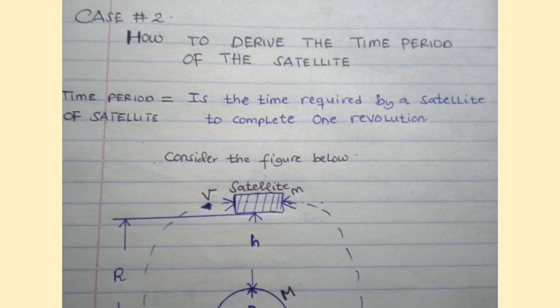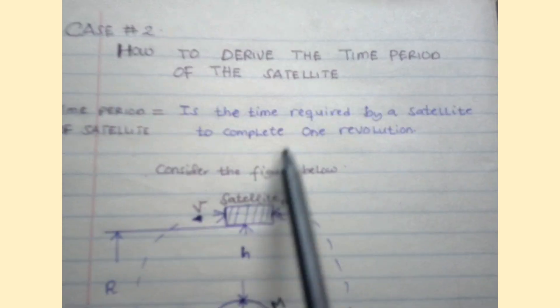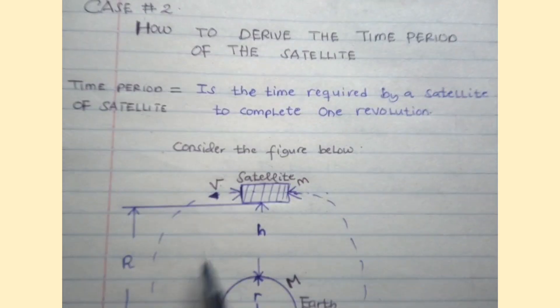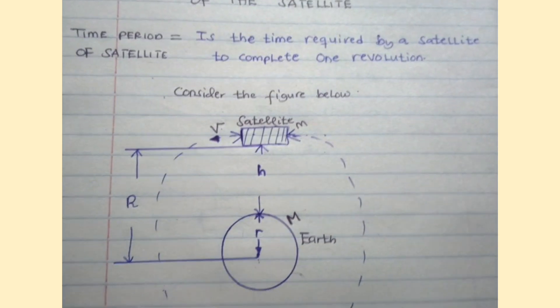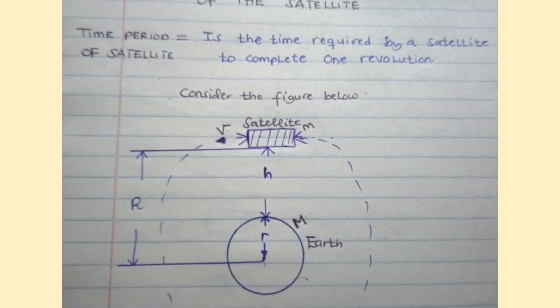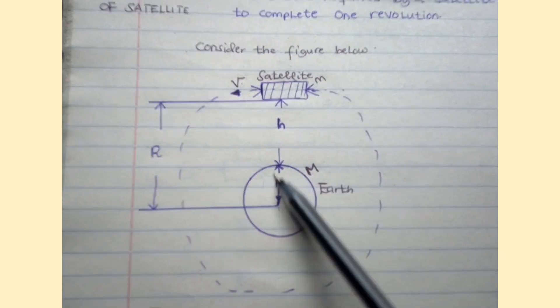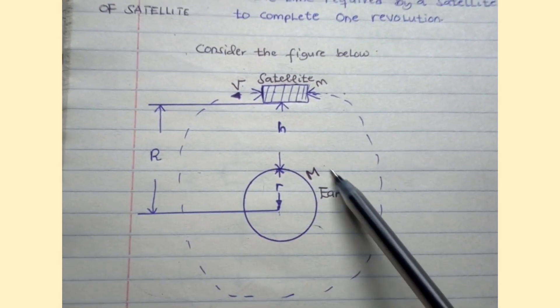In order to derive this time period of satellite, let's consider the figure below. Here we have the Earth with capital mass M and small radius r.